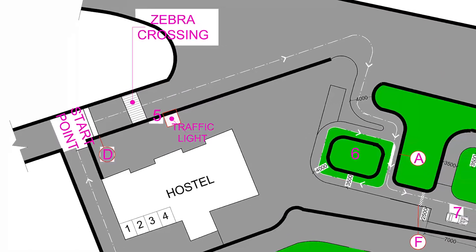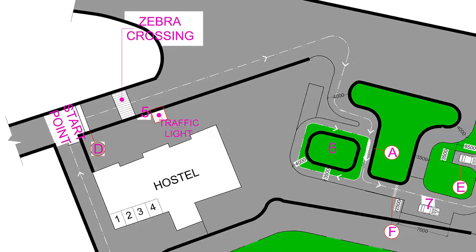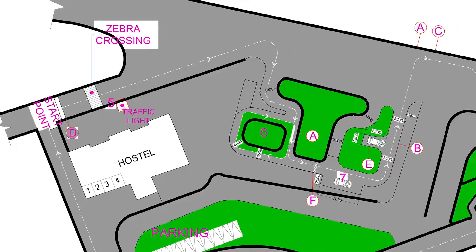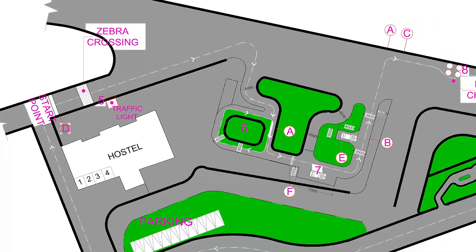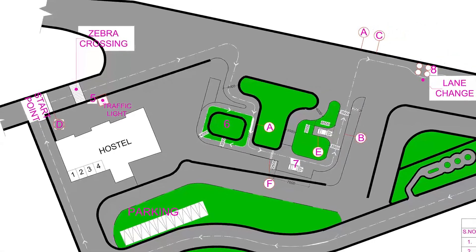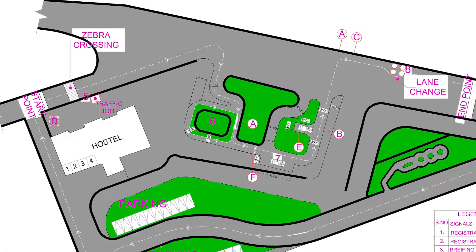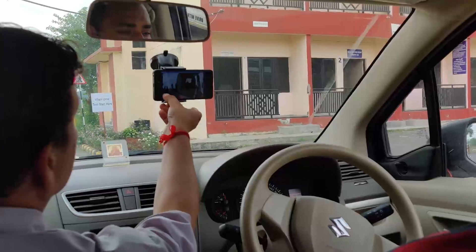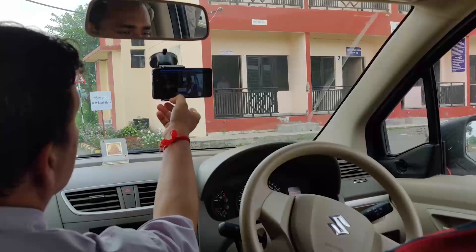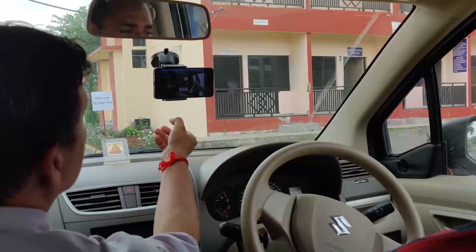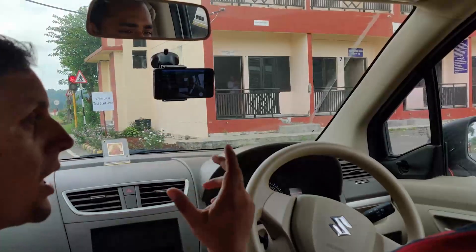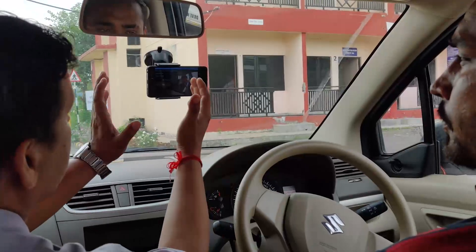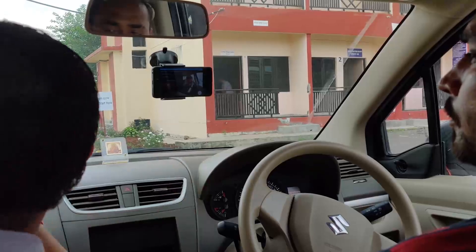During the test, the candidate has to drive through various maneuvers such as a traffic light junction, parallel parking, and so on. The setup for license testing automation includes a smartphone mounted onto the windshield of the vehicle.